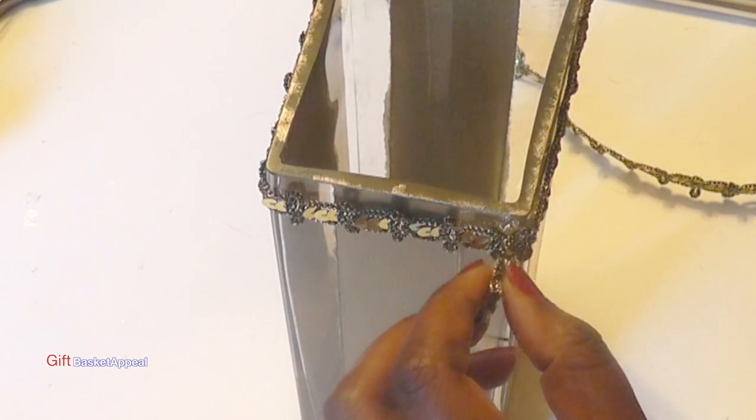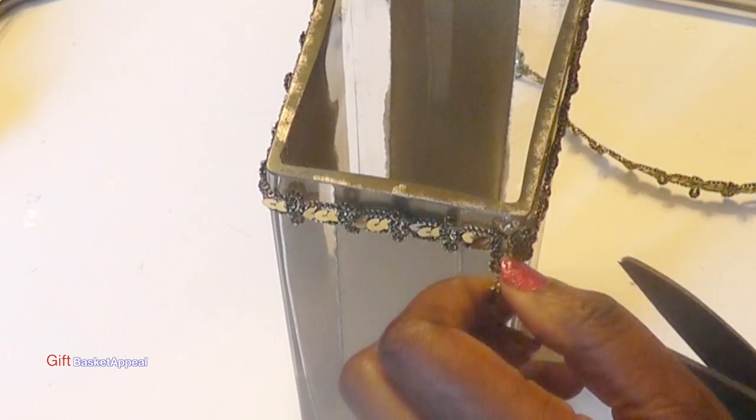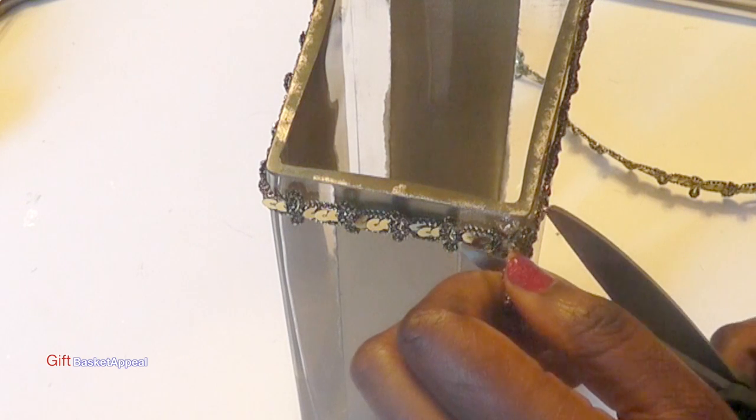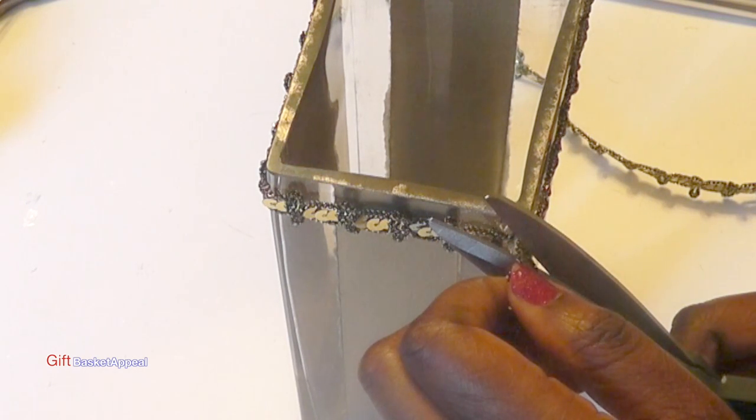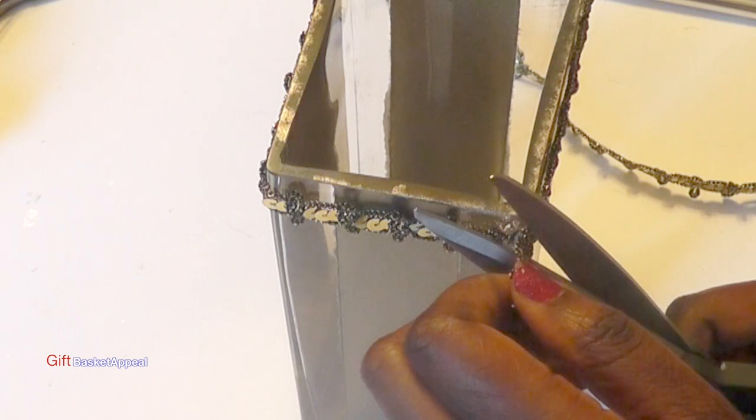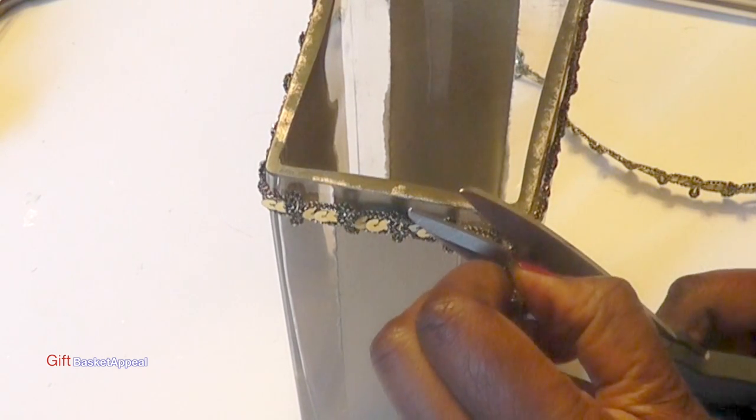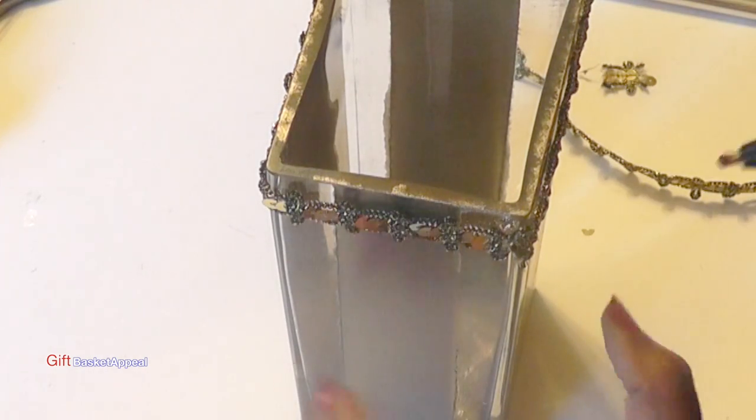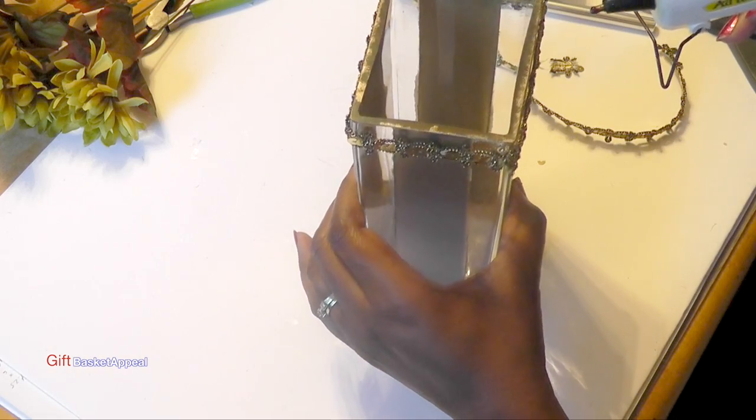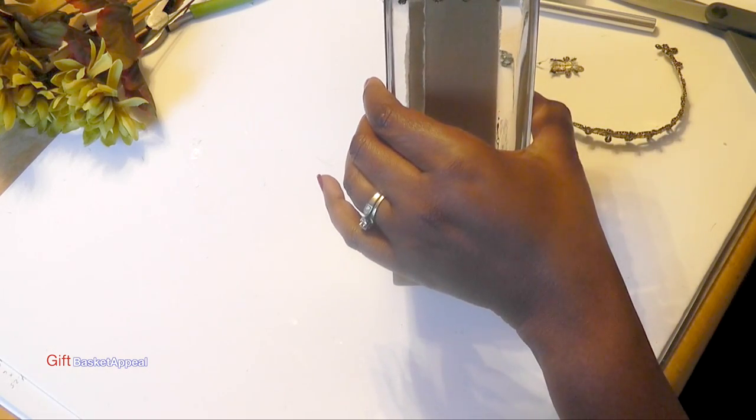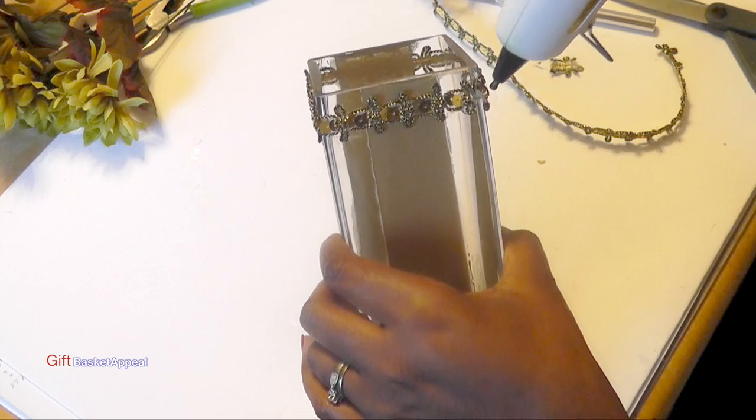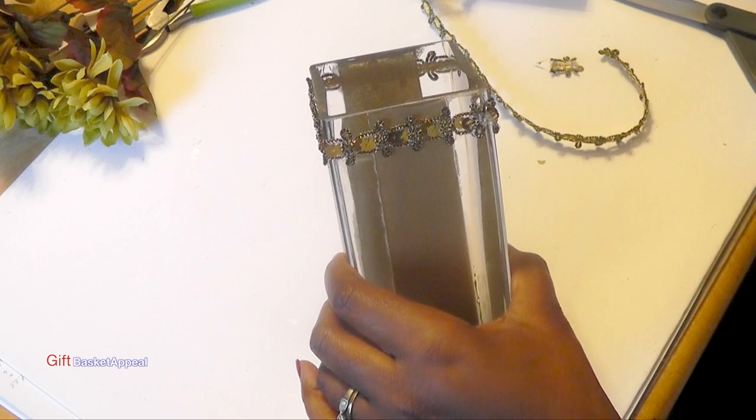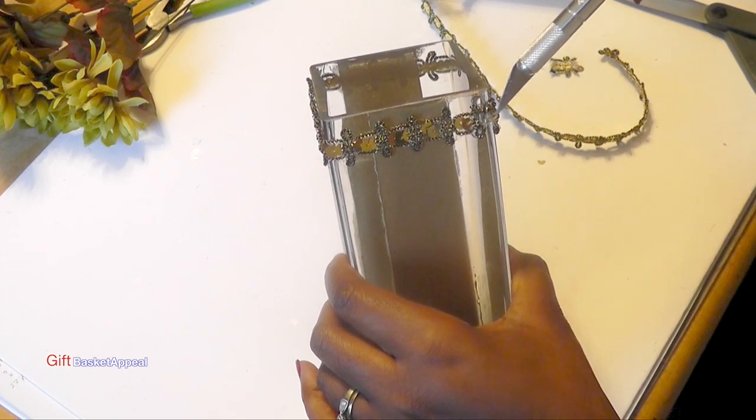End it right there. I'm going to take my scissor and just cut it right about there. Okay, and then I'm going to just hot glue it right here again. That will end it, and we won't be able to really see it.